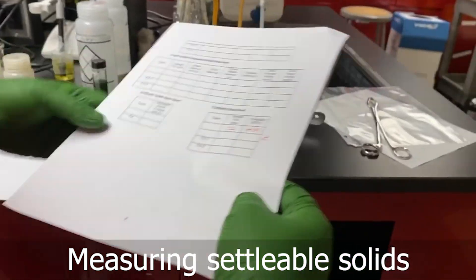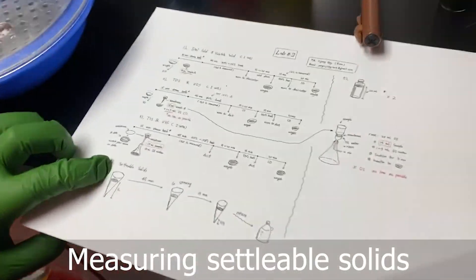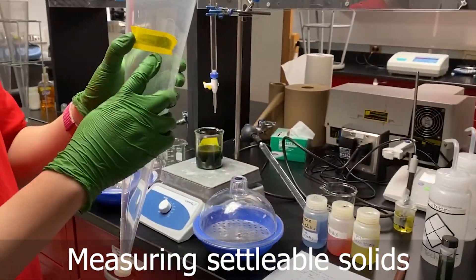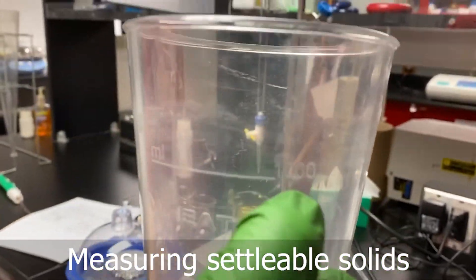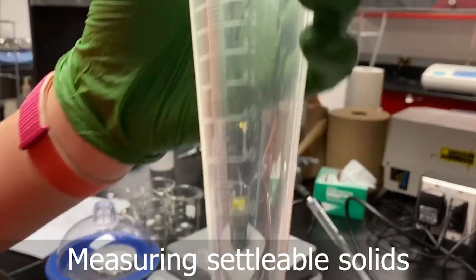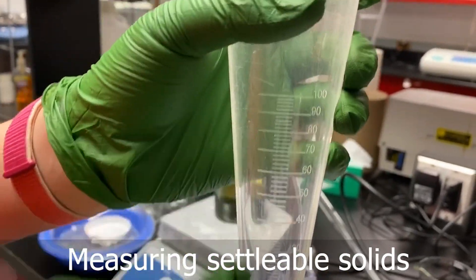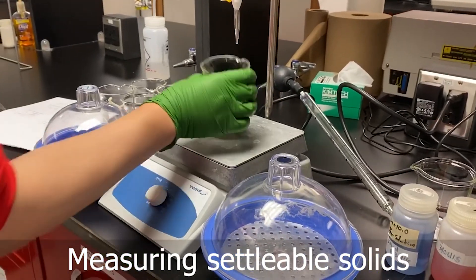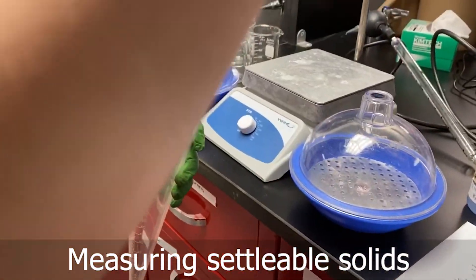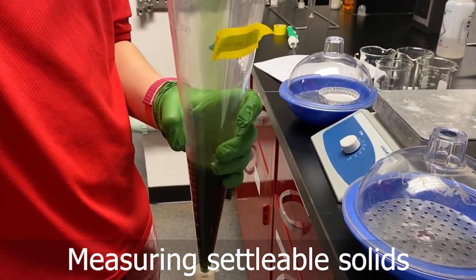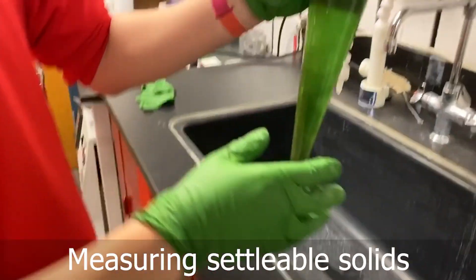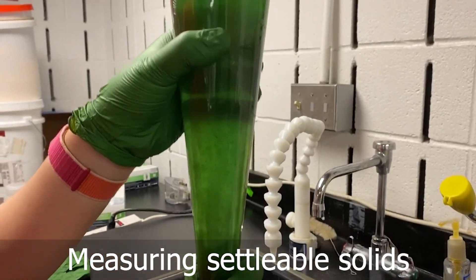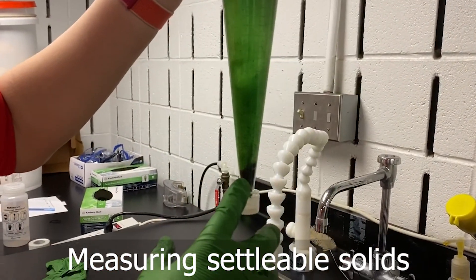And finally, we are going to do the settleable solids. We use this cone and you can write your name down, and then we can see here is the scale of 1 liter. Because I don't have 1 liter wastewater sample today, I just use all of this. Now we have 1 liter of the wastewater sample, so we can just wait when it's settling down.